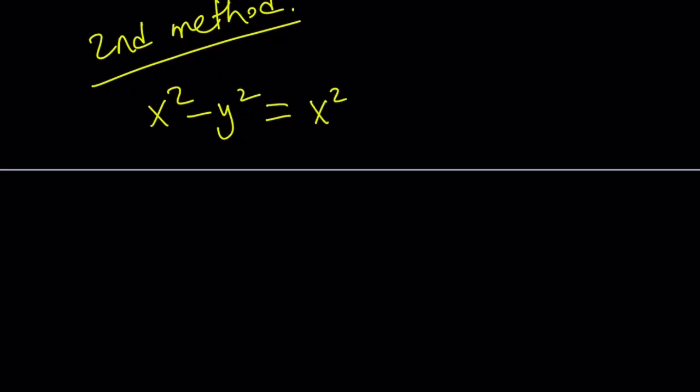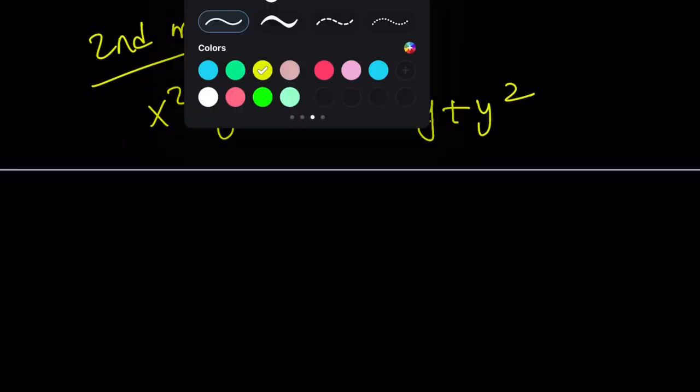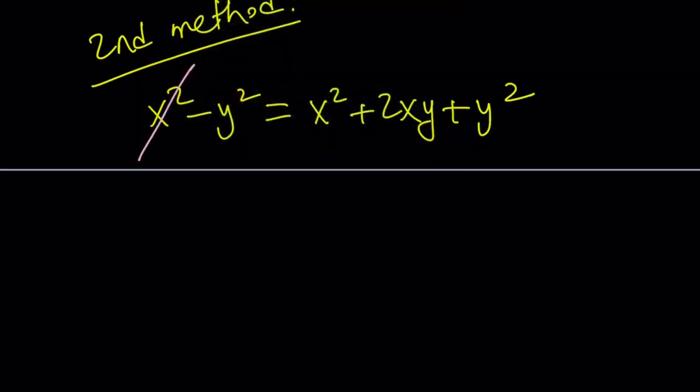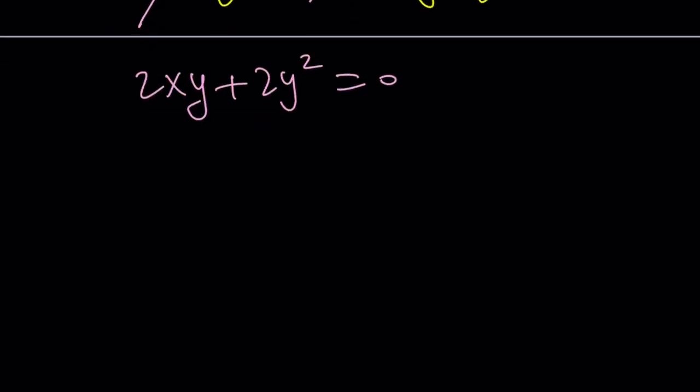Let's expand everything on the right-hand side. x squared plus 2xy plus y squared. And I was hoping to cancel something out. Looks like x squared can be canceled out. Great. I'm going to cancel that out and then put y squared on the right-hand side. So I get 2xy plus y squared plus y squared 2y squared equals 0. And then from here dividing both sides by 2 or factoring out 2y, we get x plus y equals 0.